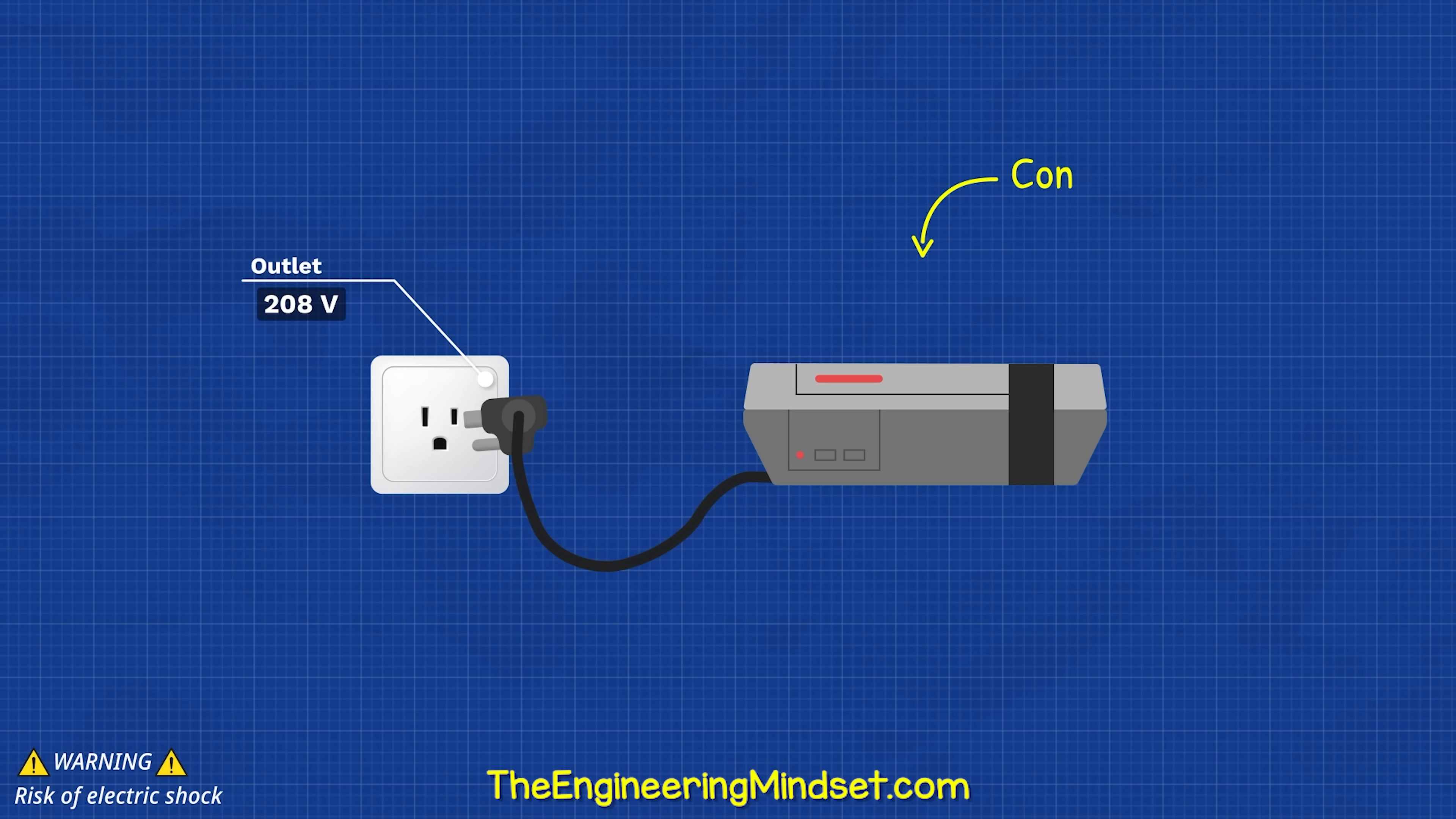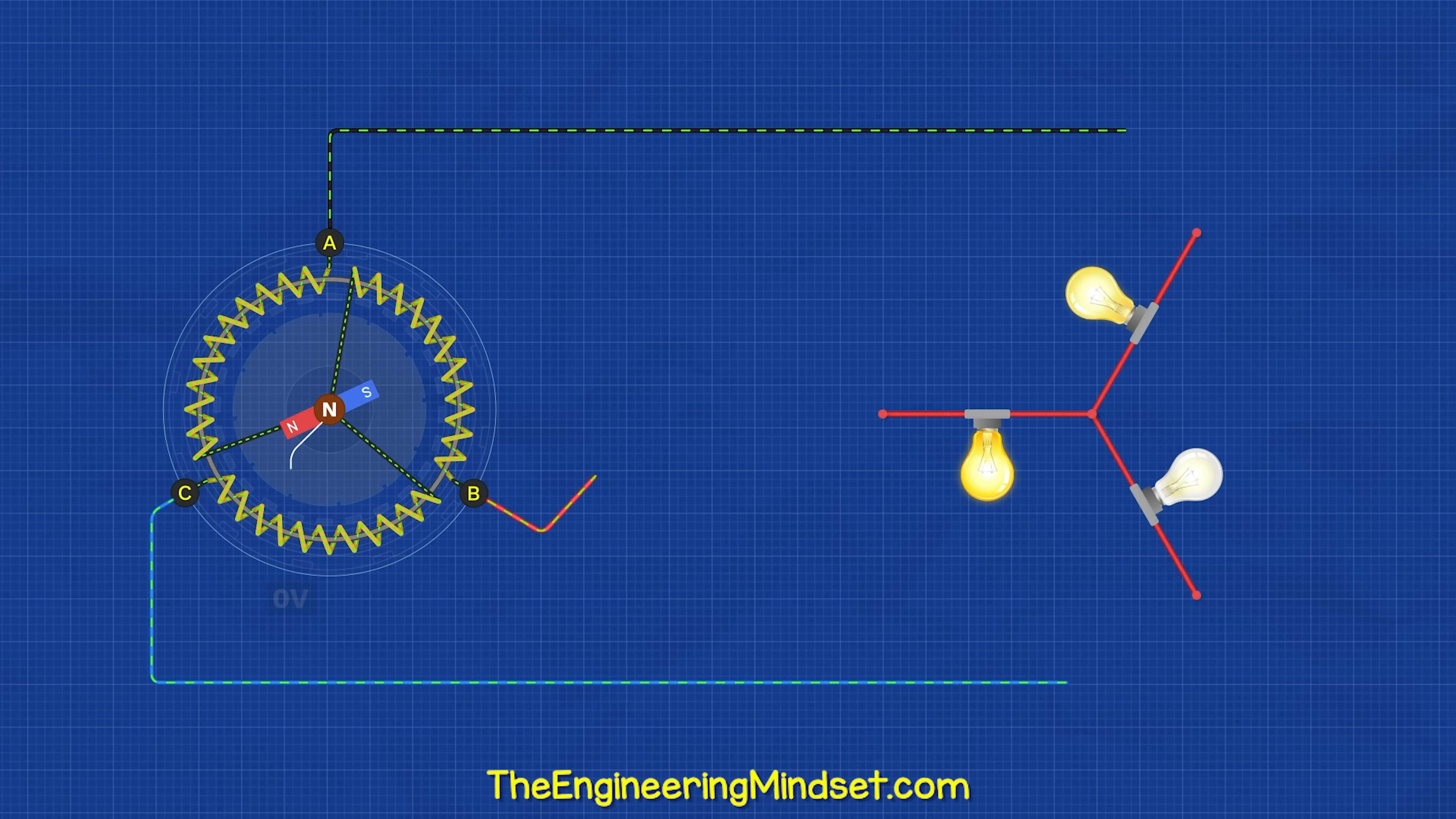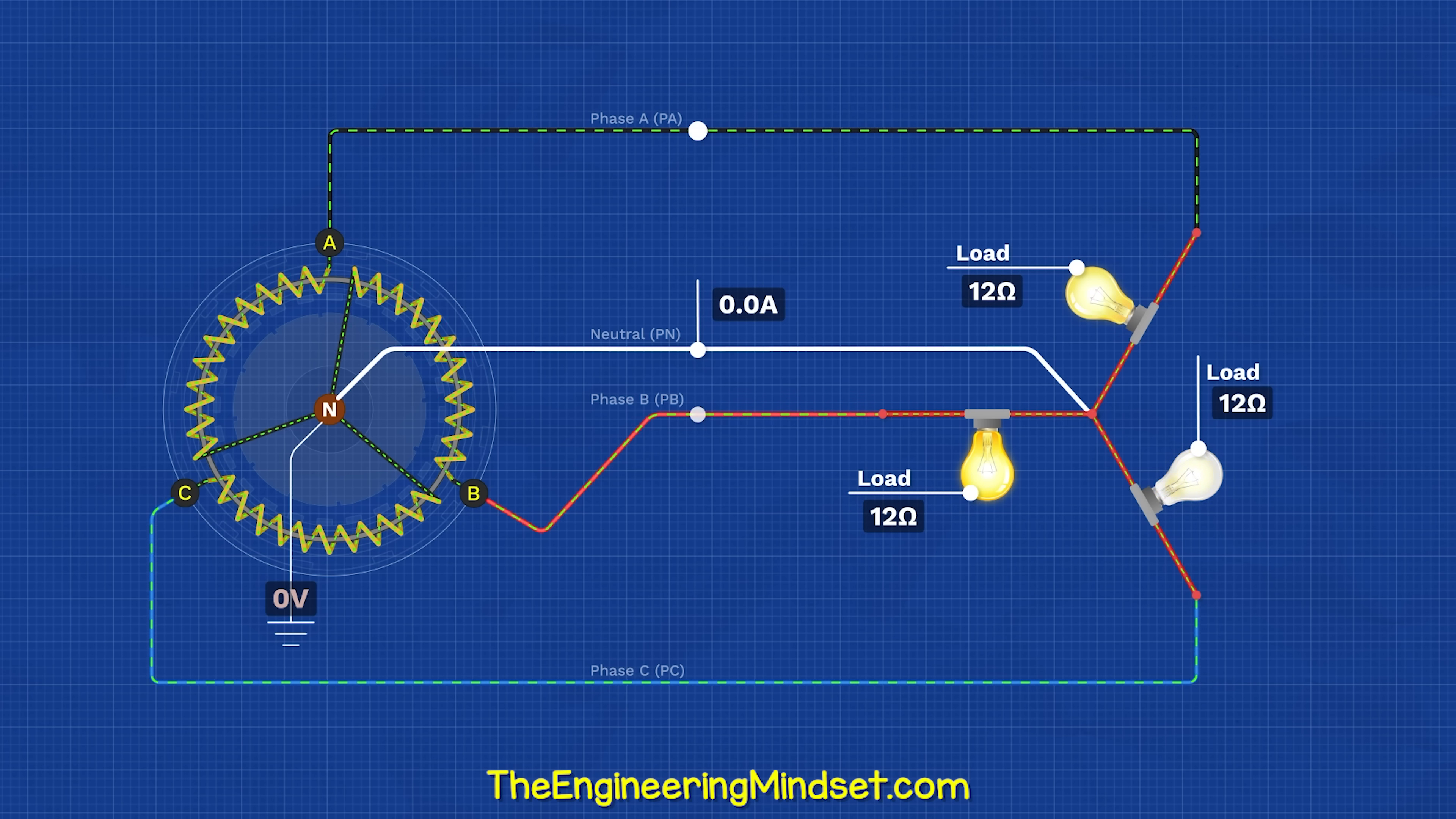We can't use this to power our outlets because it will destroy our appliances. But if we reconfigure this into a Y connection, then we can run a neutral wire from the center point back to the center of the generator. We can also connect this point to ground, meaning that this point in the system is zero volts. If the current is balanced on all phases, then no current will flow on the neutral.